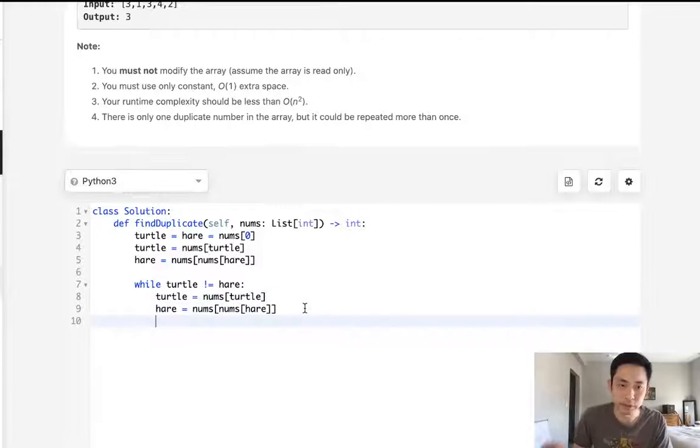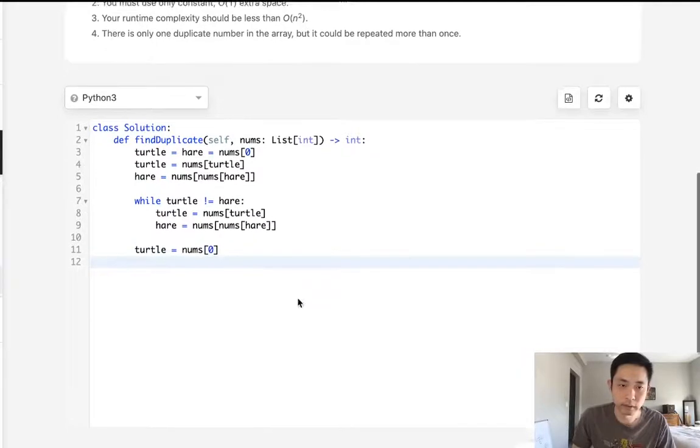So once they do equal one another, this is the position at which there's an intersection. And once we do that, we just move the turtle back to the beginning.